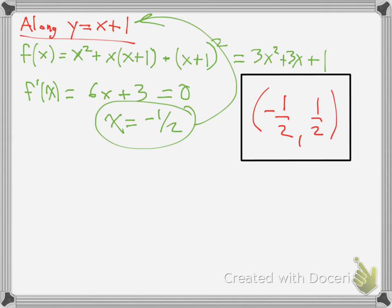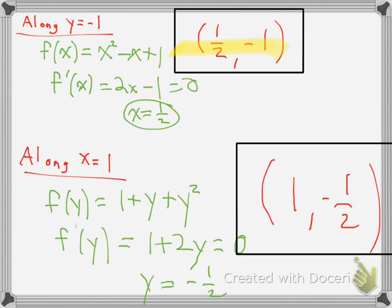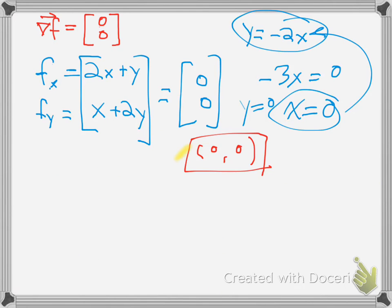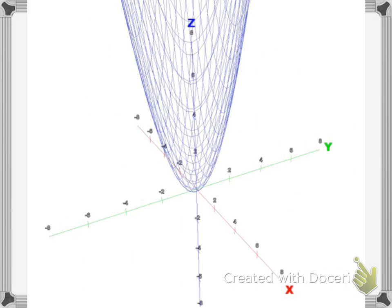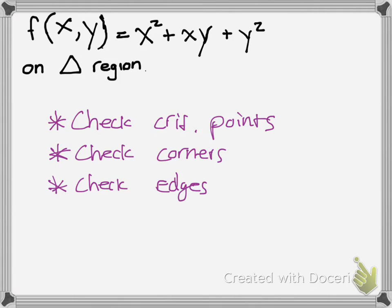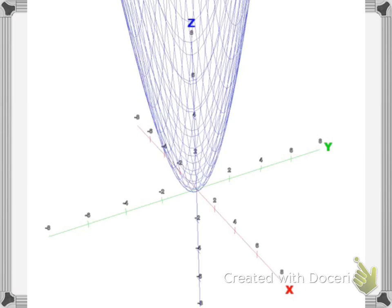So now we have all these points. We have this point here, this point here, this point here, and this point here. But also, we have these points. Those also count. Because remember, you have to check your critical points, your corners, and your edges. It's kind of like from 1D calc, like calculating your critical points, endpoints, and stuff like that.